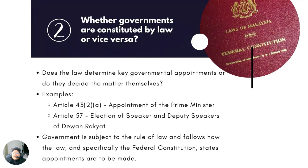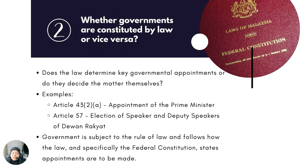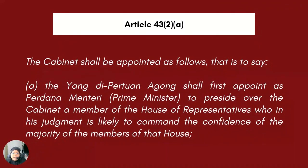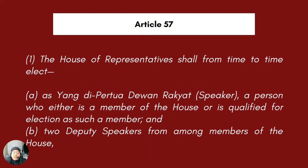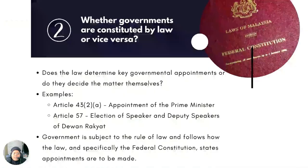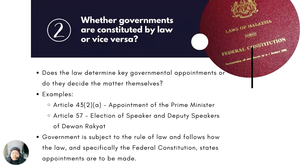The second question to be asked is whether governments are constituted by the law or vice versa. According to Andrew Harding, this is essentially to determine whether the law determines key governmental appointments or whether they decide the matter themselves. In the constitution, it is quite clear that these positions are constituted by the law. Some examples would be the appointment of the Prime Minister in Article 43, Clause 2, Paragraph A, and the election of the Speaker and Deputy Speakers of the Dewan Rakyat in Article 57. Therefore, it can be said that the government is subject to the rule of law and must adhere to how the Federal Constitution constitutes how the government is formed.